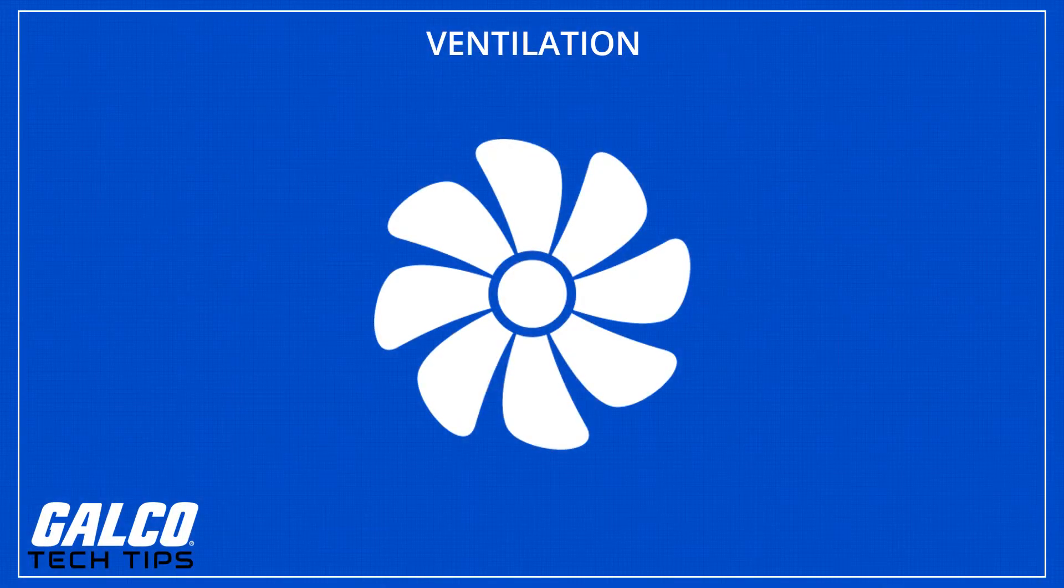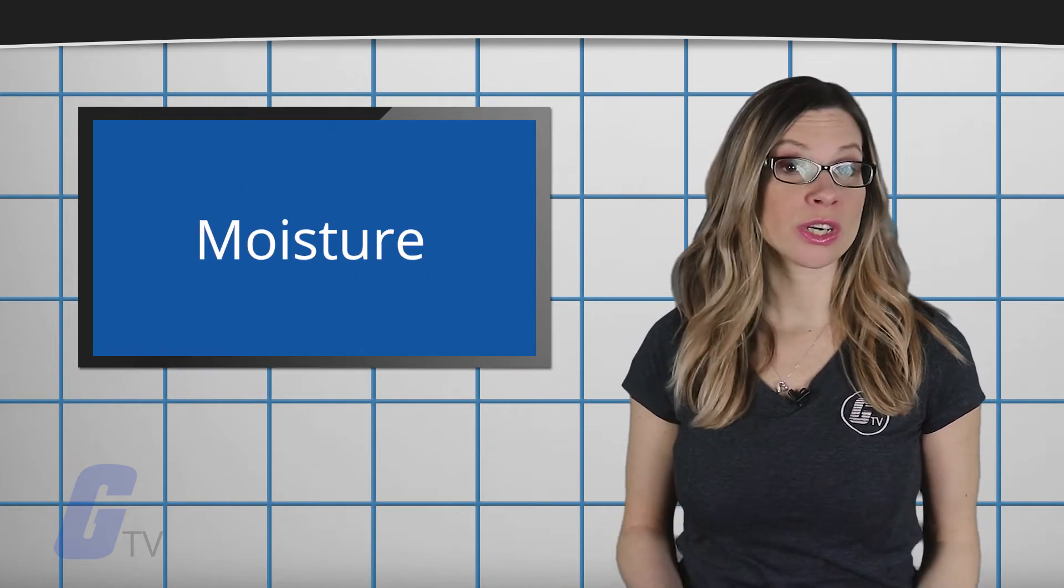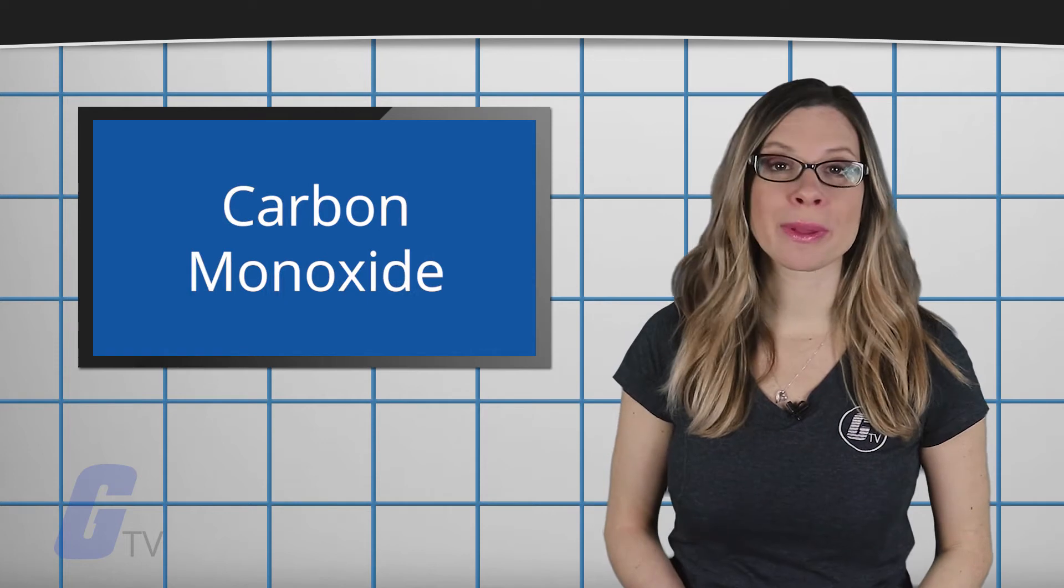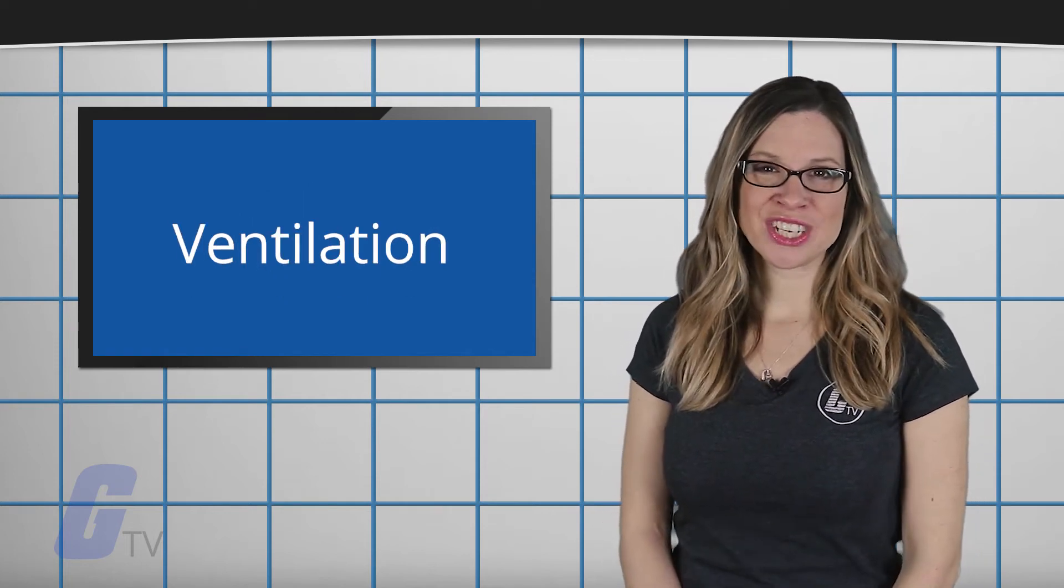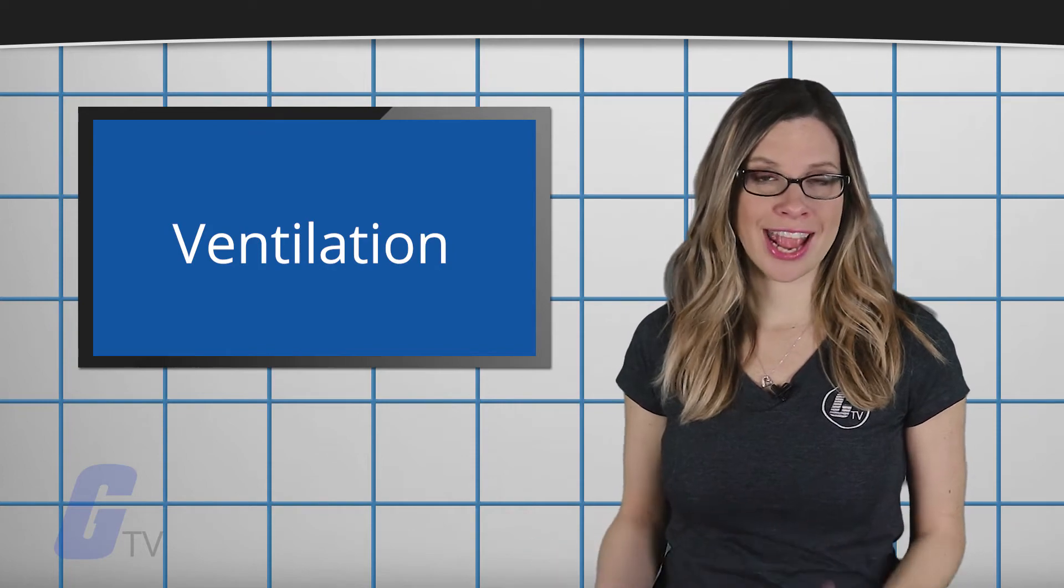Ventilation involves changing or replacing air in any space to control temperature or remove elements such as moisture, odors, smoke, heat, dust, airborne bacteria, or carbon monoxide. Ventilation systems are also used to replenish oxygen in an area.